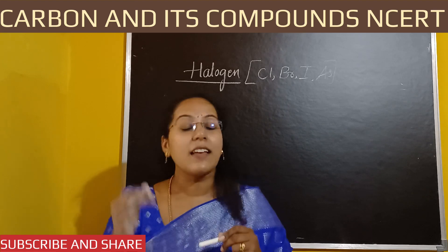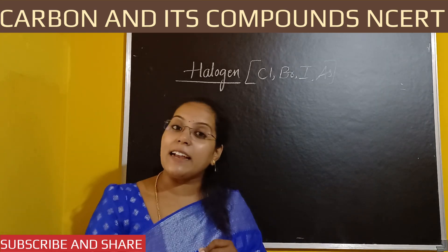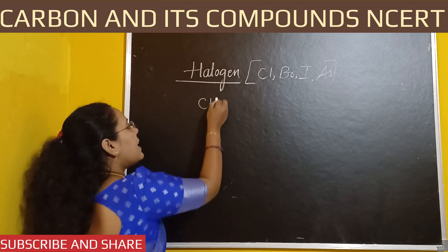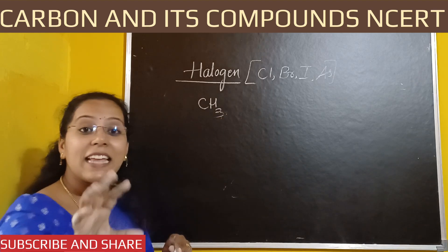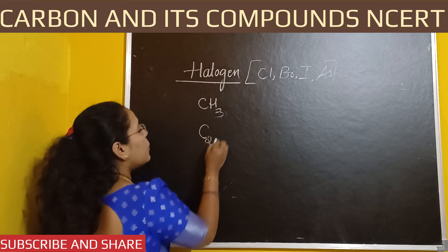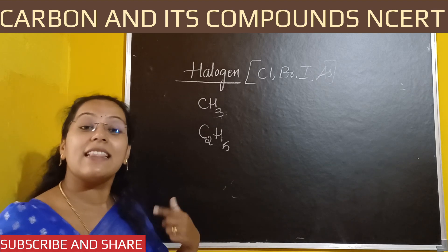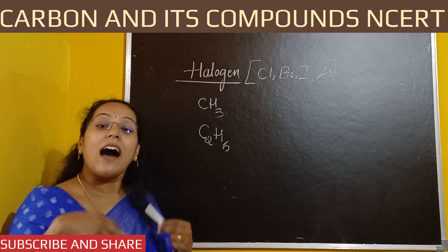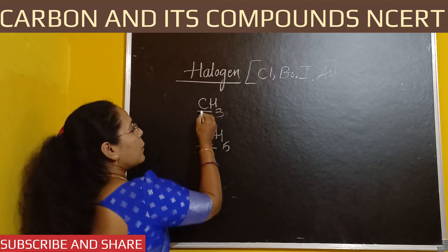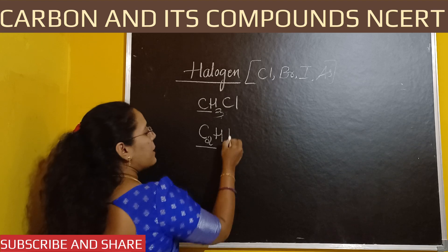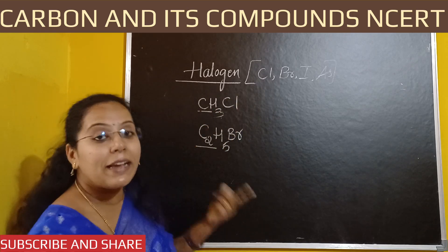An alkyl group is formed when we remove one hydrogen from an alkane. For example, from CH4 (methane), removing one hydrogen gives us CH3, which is the methyl group. When we take C2H6 (ethane) and remove one hydrogen, we get C2H5 — the ethyl group. So halogens will attach to the alkyl group. For example, CH3 with chlorine gives us CH3Cl.